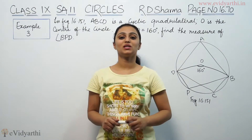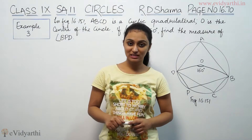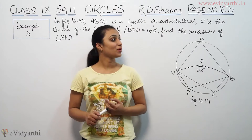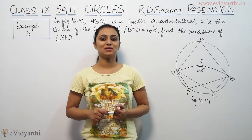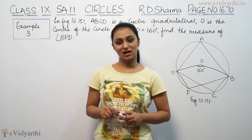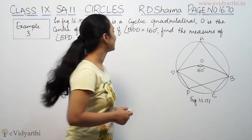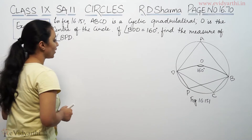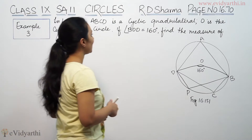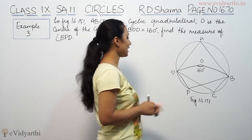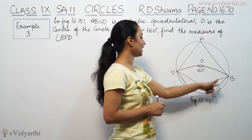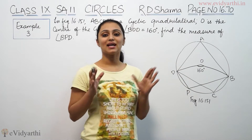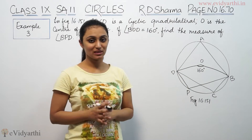Hi, this is Khushbu with another question on circles. This is question number 3 from page number 16.70 of RD Sharma. It says: in figure 16.151, ABCD is a cyclic quadrilateral.